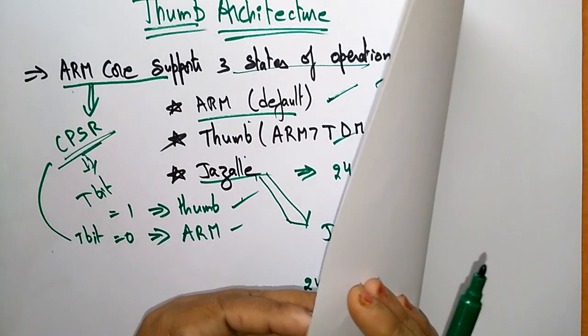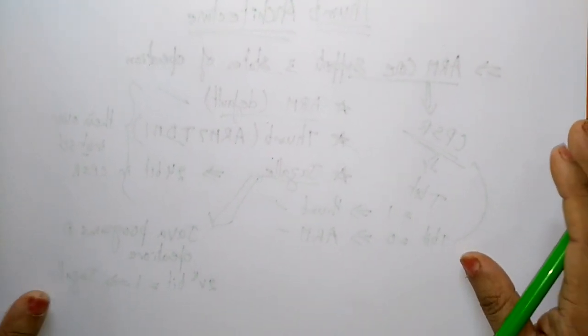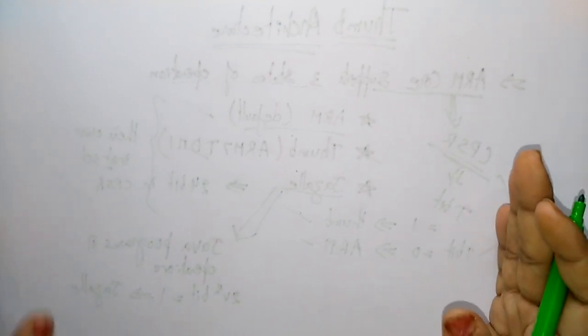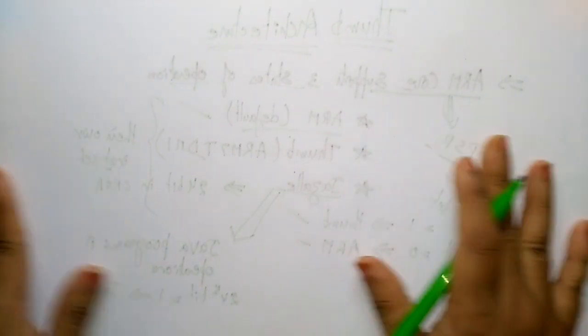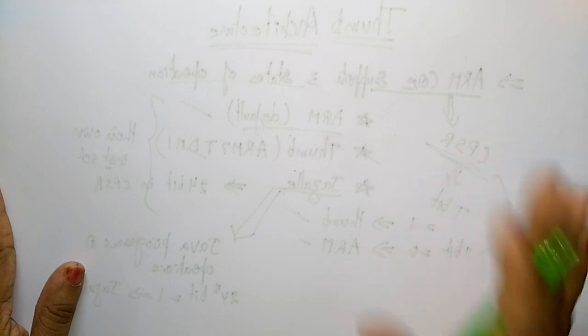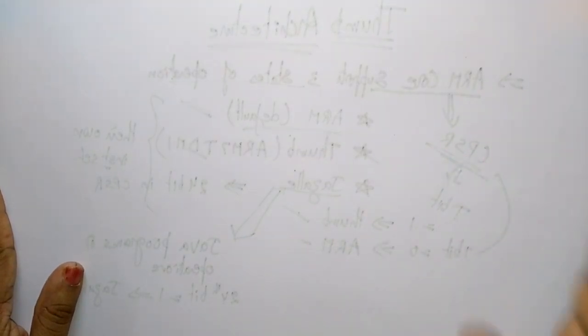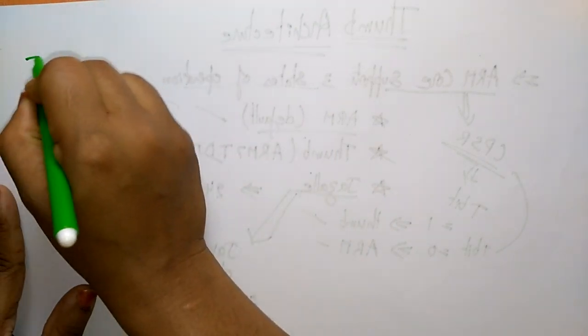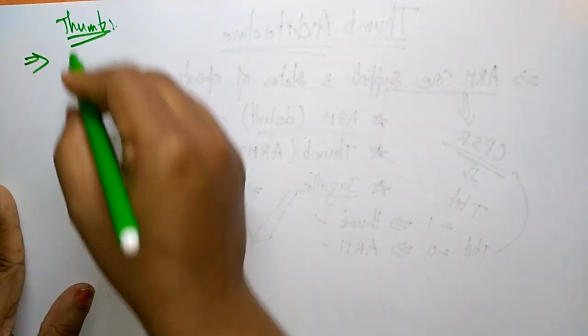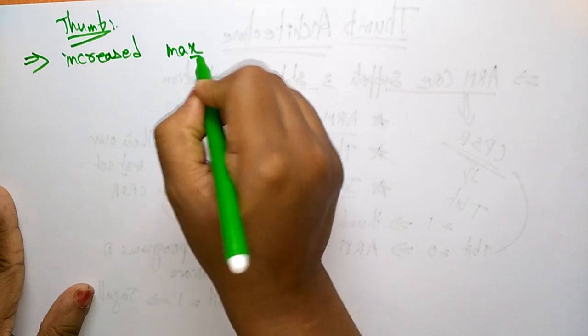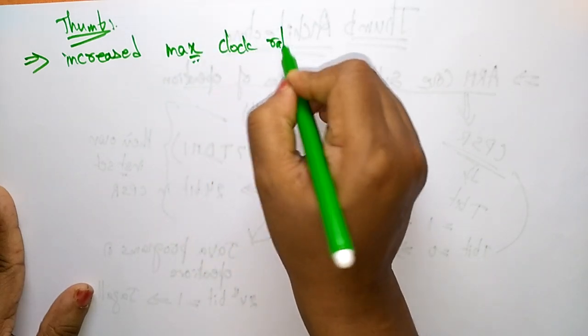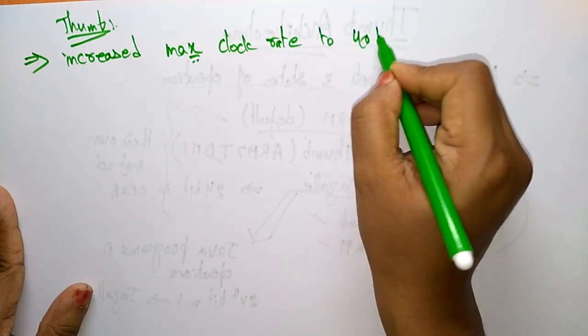Now let's see the Thumb architecture — why we are using this and what are the main features. Instead of using the normal ARM core, why are we going for Thumb? The ARM family grows to include the ARM7 which extends the architecture to full 32-bit addressing. Thumb is going to increase the maximum clock rate up to 40 MHz.